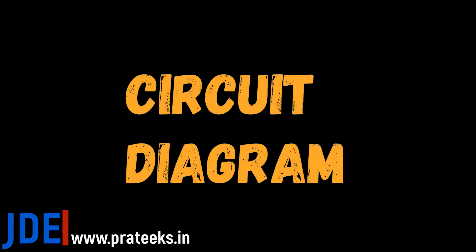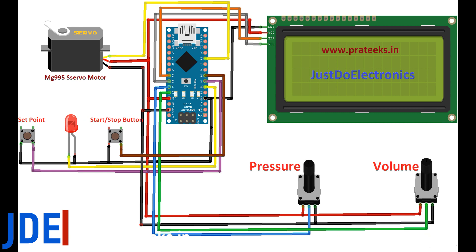Let's go and see the circuit diagram. This is not a final circuit diagram — I am just creating the Arduino-based circuit. It uses two potentiometers, two push buttons, one LED, and one servo motor, all controlled by the Arduino Nano microcontroller with a 20x4 LCD display.